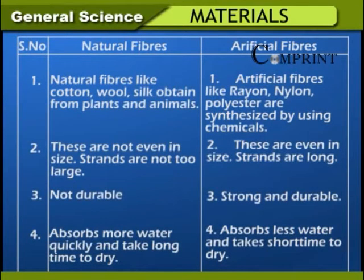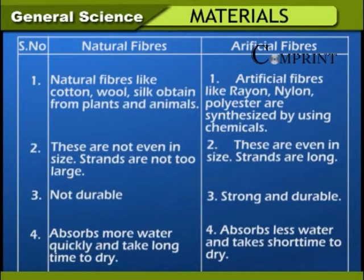Differences between natural and artificial fibers: Natural fibers like cotton, wool, and silk are obtained from plants and animals, whereas artificial fibers like rayon, nylon, and polyester are synthesized using chemicals. Natural fibers are not even in size and strands are not too long. Artificial fibers are even in size and strands are long. Natural fibers are non-durable; artificial fibers are strong and durable. Natural fibers absorb more water quickly and take a long time to dry; artificial fibers absorb less water and take a short time to dry.